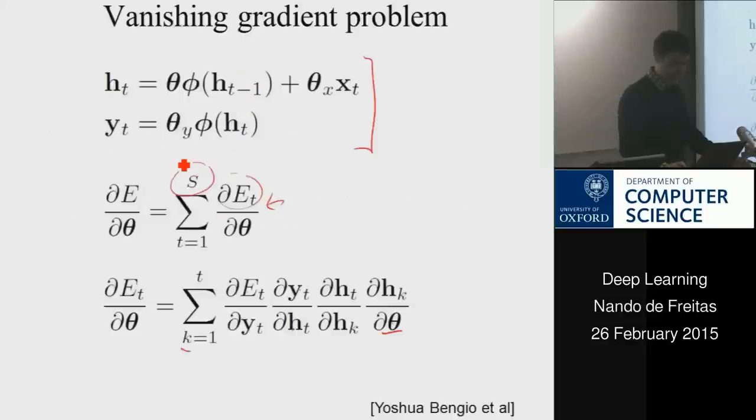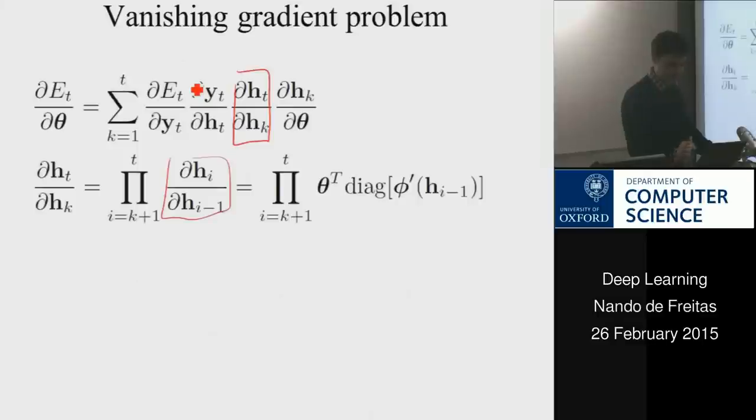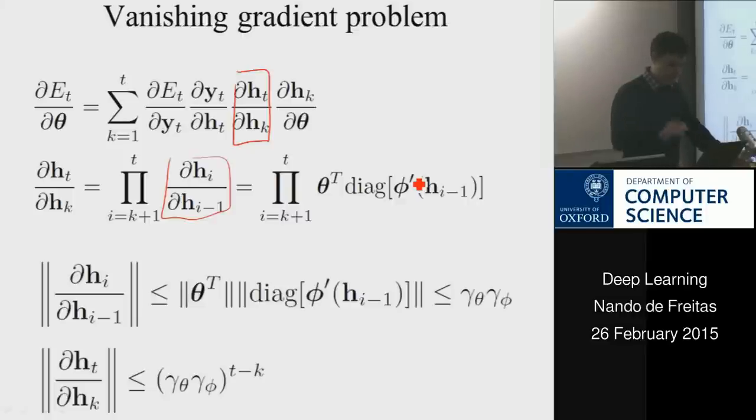And if you do that for a simple model, once you get to stage h minus 1, essentially it's the derivative of this guy with respect to this guy, which would just give me theta transpose, and then the derivative of phi, which I'm just calling phi prime, and I'm putting it in a diagonal matrix so that the dimensions agree. And I also recommend for these tedious calculations that you check at home that they're correct.